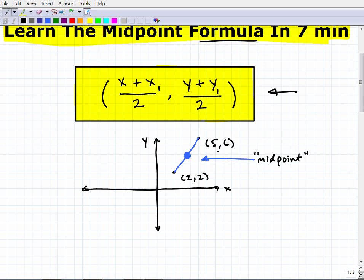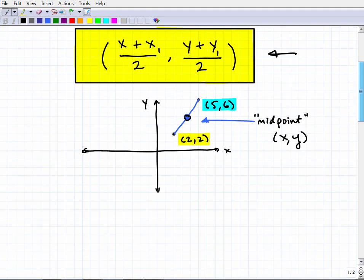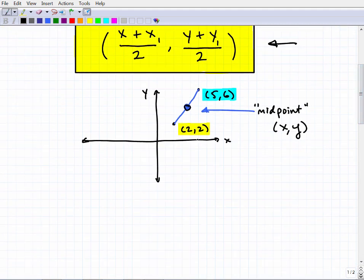(5, 6) and (2, 2), is this coordinate right there. So the midpoint formula basically is a formula that helps us determine, hey, what exactly is the midpoint? Where is the location of the midpoint, the midpoint in between these two points? So this is what we're doing, and it's actually a very easy formula to apply.